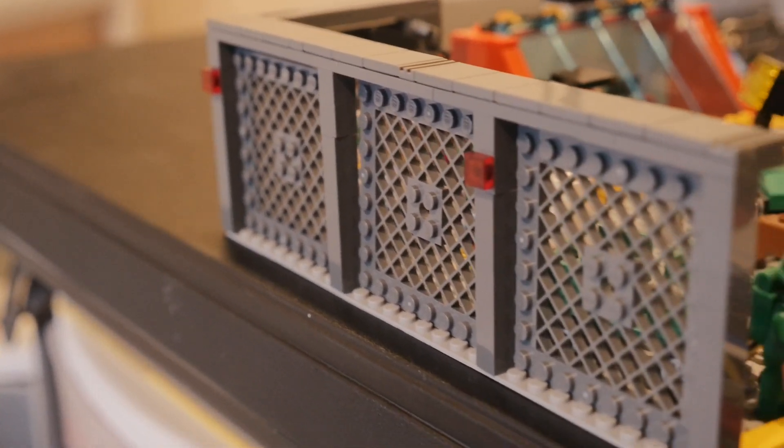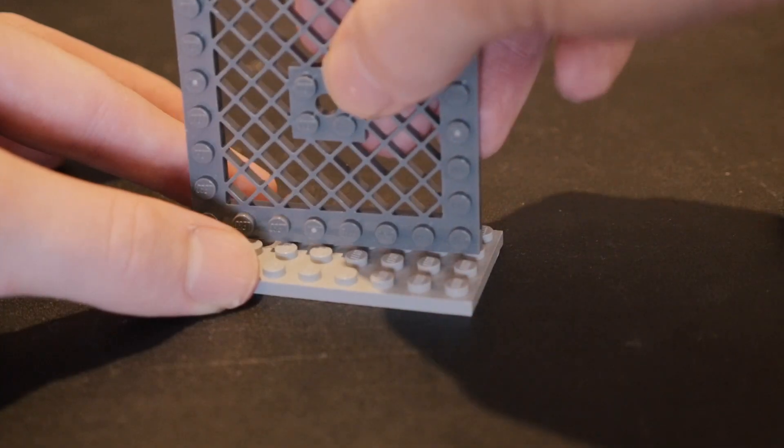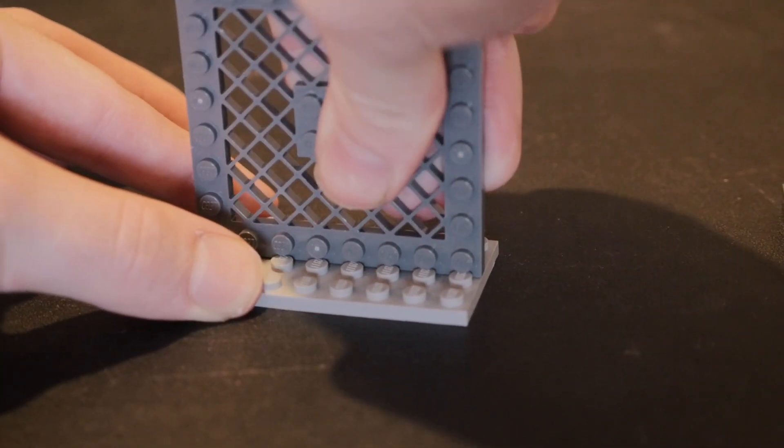The fences around the Space Center are really easy to make. I just use some of these 8x8 plates with grating in the middle, and I'm sticking them between the studs on their side, which looks really great for fences.